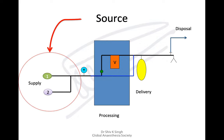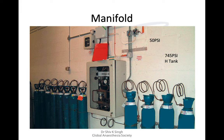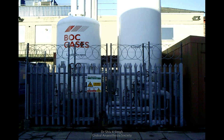The sources include cylinders and the VIE. VIEs are also known as cryogenic liquid systems (CLS) and are found outside the hospital. They operate at high oxygen levels and can also come from the manifold rooms within the hospital. The cylinders in manifold rooms are H-type cylinders at 4,745 psi — very high pressure — and pressure regulators reduce this to around 50–60 psi in the pipeline.